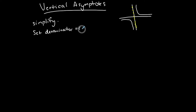The reason that you simplify first is because sometimes you have discontinuities in your function — for example, a hole. It's called a discontinuity because it's a piece of the graph that's kind of taken out. We call it a removable discontinuity when it's a hole.